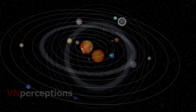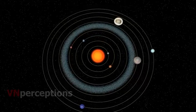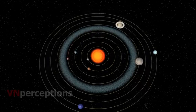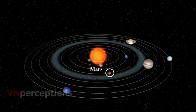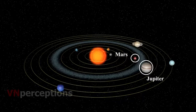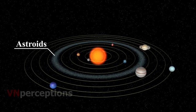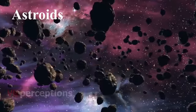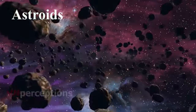Now let us learn about some other members of the solar system. The first one is asteroids. There is a large gap between the orbits of Mars and Jupiter. This gap is occupied by a large number of small objects that revolve around the sun, and these are called asteroids. Asteroids can only be seen through large telescopes.